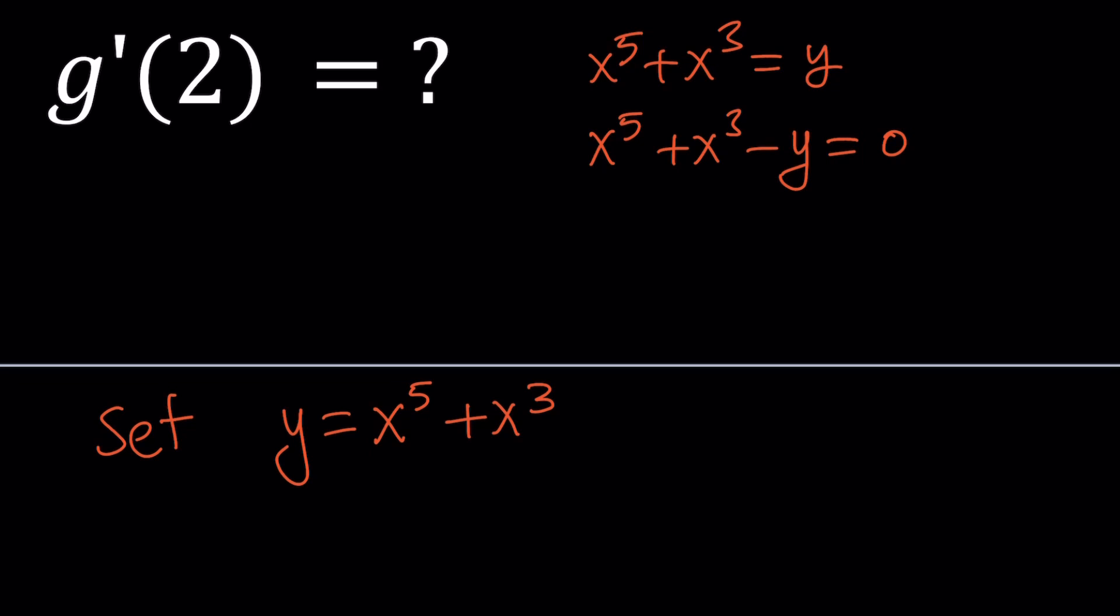Finding the derivative of the inverse function basically means finding the derivative of x with respect to y, because our inverse function is obtained by getting x as a function of y. From here, if we were able to get an expression for x, it would be g(y). So we're trying to differentiate g with respect to y, but it's impossible to find x in terms of y.